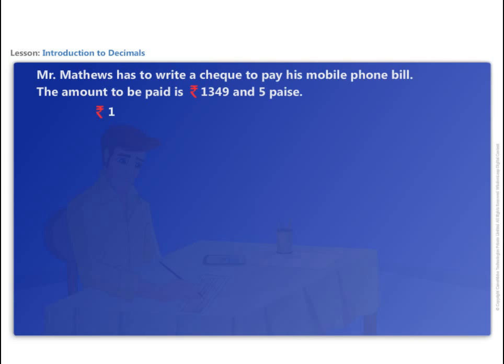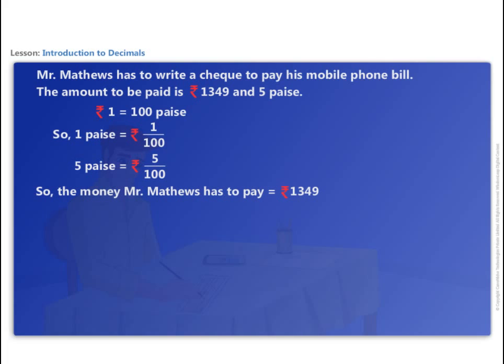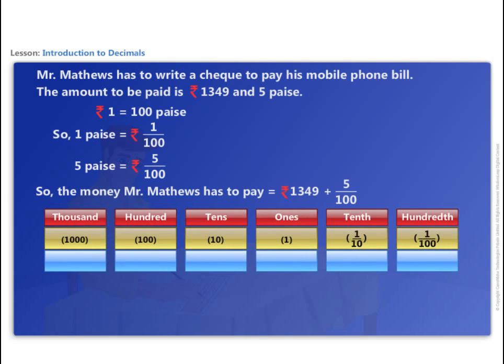One rupee is equal to hundred paise, which means one paise is equal to 1 by 100 rupee, which means 5 paise is 5 by 100 rupee. So, the money Mr. Matthews has to pay is 1349 plus 5 by 100. How can we write it using a decimal point?